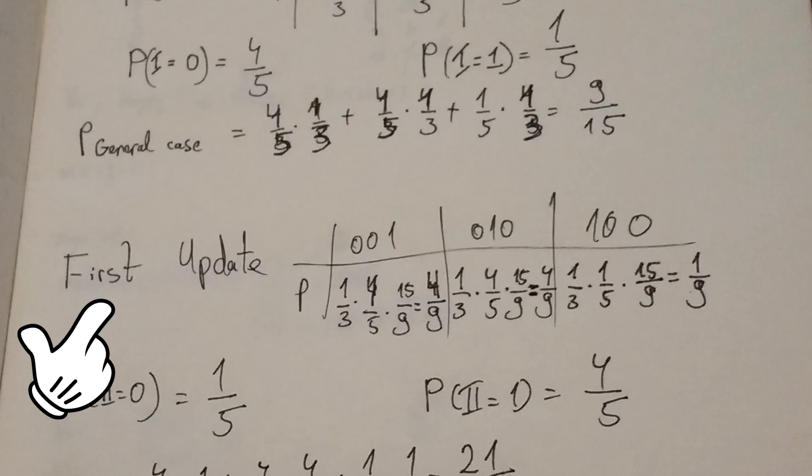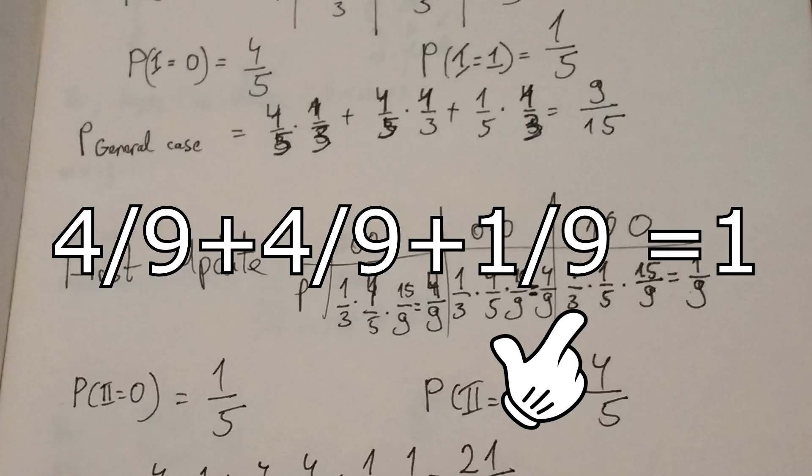Then, we make a new table that is our first update. In the first two cells, we multiply one third times four fifths times one over nine fifteenths, which is basically fifteen ninths, and one third times one fifth times fifteen ninths. The results make sense. Since we got zero for the first digit, it makes sense that there is a bigger chance to have 001 or 010, and have a lower chance for 100. Also, what is important is that the sum of these three numbers is one.